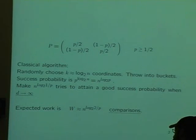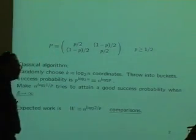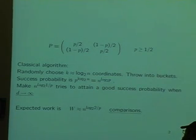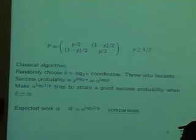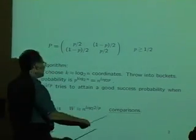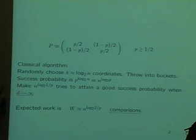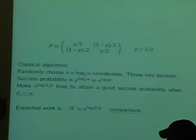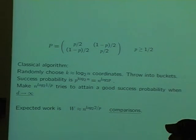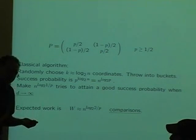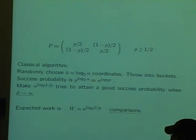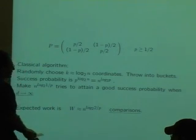We can check that if p is one — everything is perfect — the work is of order n, meaning we just have to go and read the data. This is the best case. The worst case, when p is a half, this is n squared, meaning we have to go and compare everything. These are the extremes, and the probability goes between them. I'm talking about comparisons rather than bit operations because if d, the length of the sequences, is very long, we only need to take a logarithmic number of bits until we are certain.